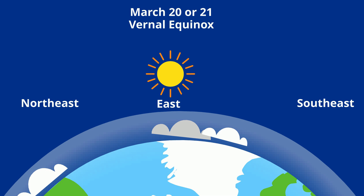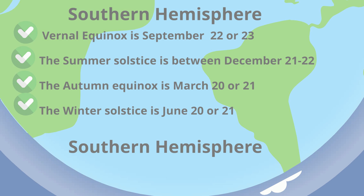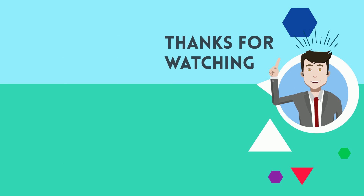After the winter solstice, the sun begins to rise a little more to the north until March 20th or 21st, and you are back at the vernal equinox. It takes a year to complete this cycle. In the southern hemisphere, the vernal equinox is September 22nd or 23rd, the summer solstice is December 21st or 22nd, the autumn equinox is March 20th or 21st, and the winter solstice is June 20th or 21st.